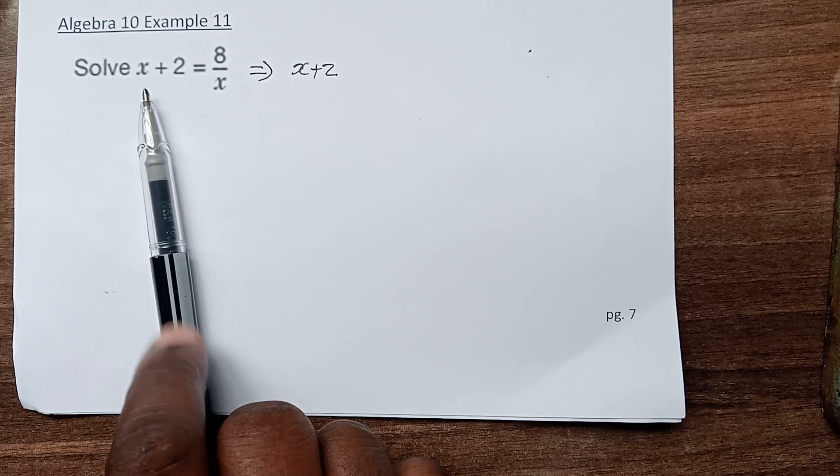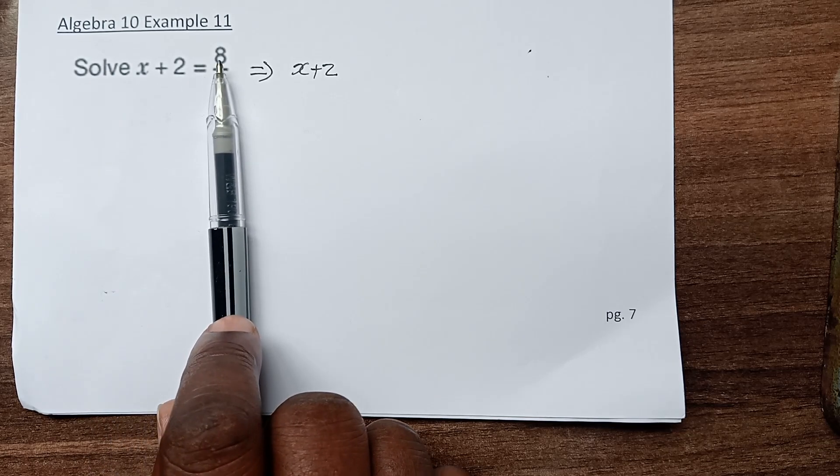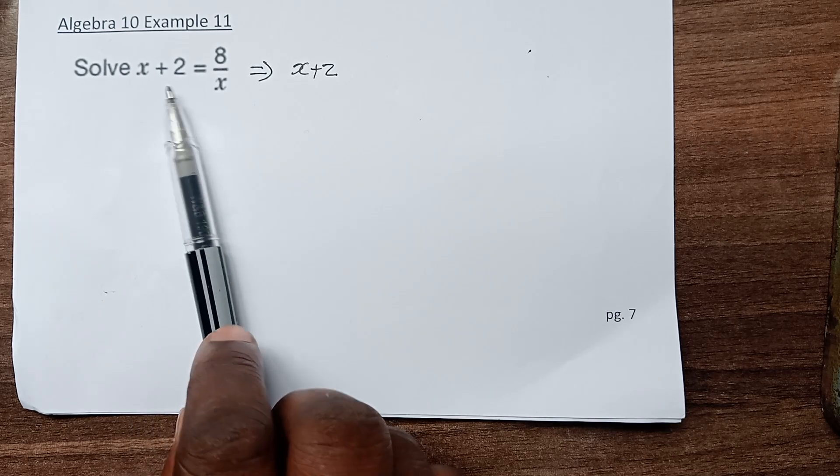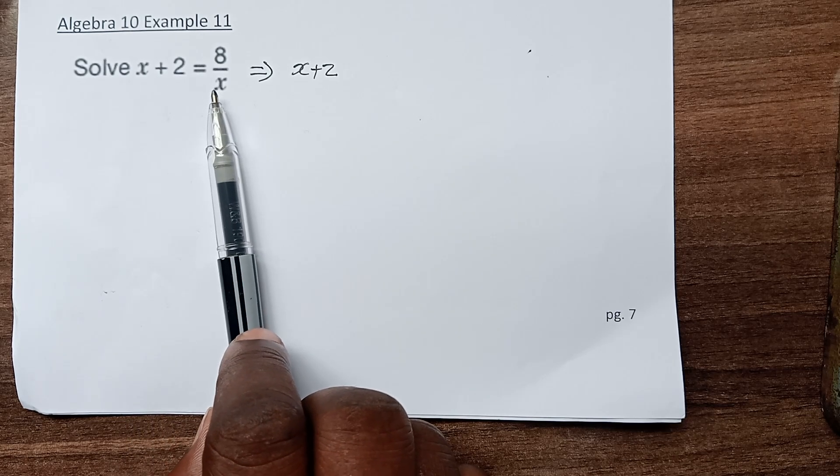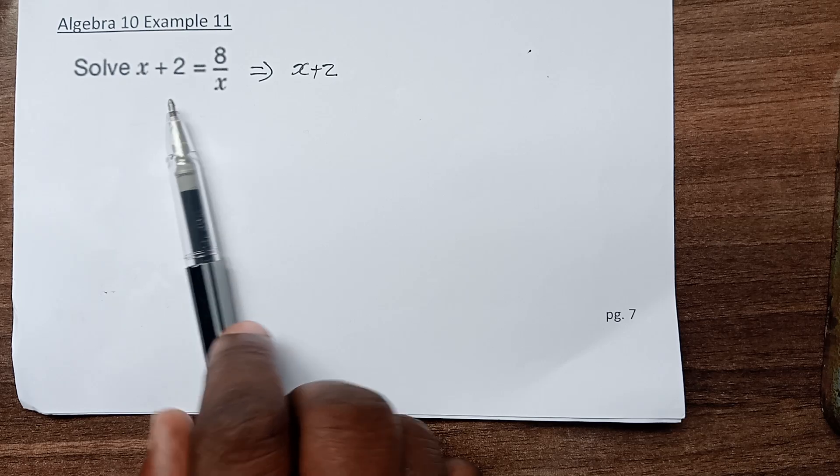We have an equation: x plus 2 equals 8 over x. It has a left-hand side and a right-hand side, which are equal.